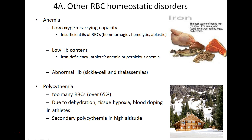To help overcome anemia, eating foods with good sources of iron can help the hemoglobin molecule. Whereas anemia suggests a low red blood cell count, polycythemia is too high a red blood cell count — over around 65 percent hematocrit. Polycythemia can result from dehydration, blood doping, or living at high altitude, where the body creates more red blood cells to cope with low oxygen levels.